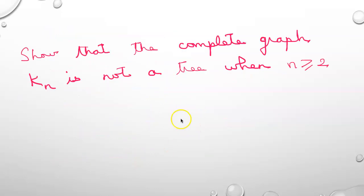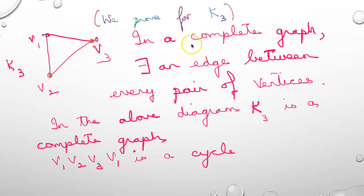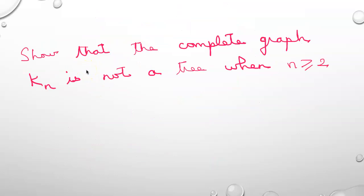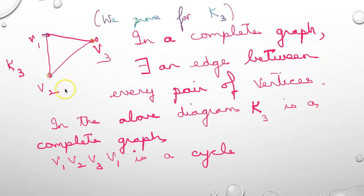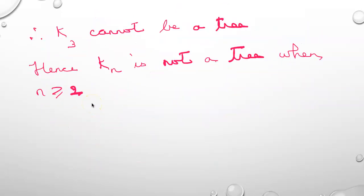Coming to a question: show that the complete graph K_n is not a tree when n is greater than or equal to 2. We prove this for K3. In a complete graph there exists an edge between every pair of vertices. In K3 we have vertices v1, v2, v3, and v1-v2-v3-v1 is a cycle. Since there is a cycle, K3 is not a tree. Hence K_n is not a tree when n is greater than or equal to 2.